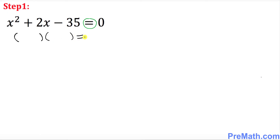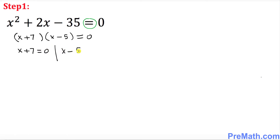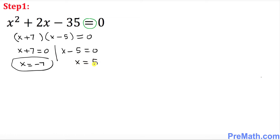Let's go ahead and find the possible factors: that's going to be (x + 7) and (x − 5). Now split them up: x + 7 = 0 and x − 5 = 0. That means x = −7 is one of our solutions and x = 5 is another one.